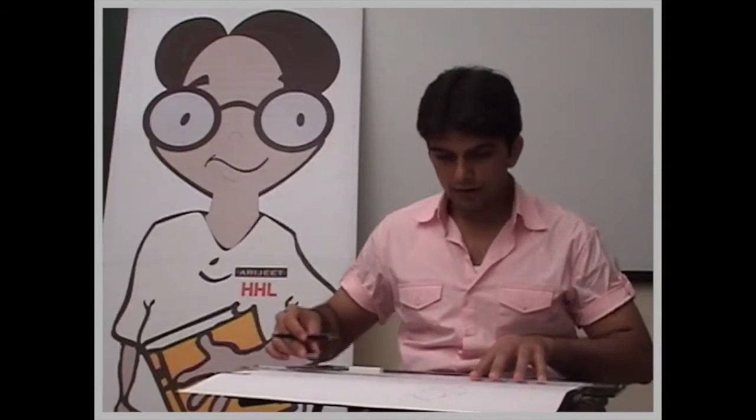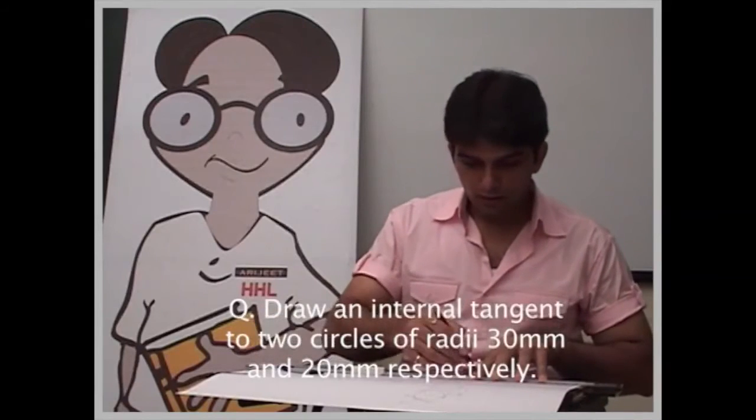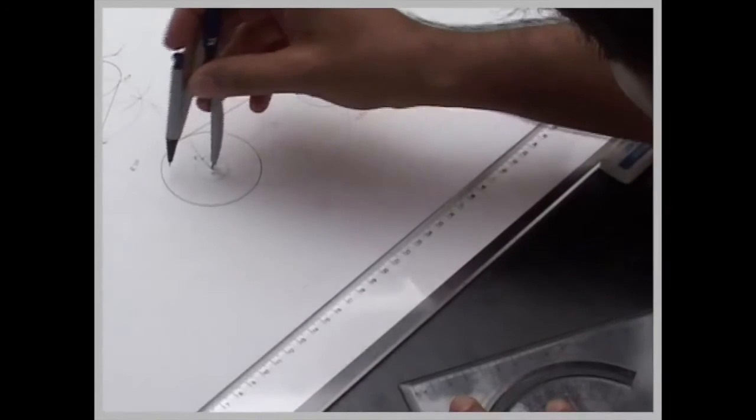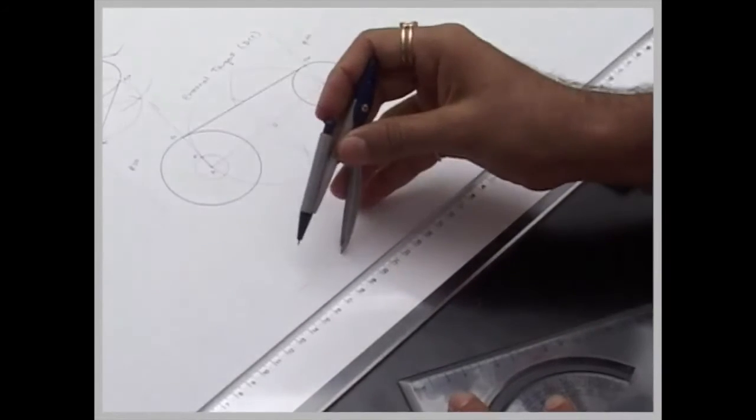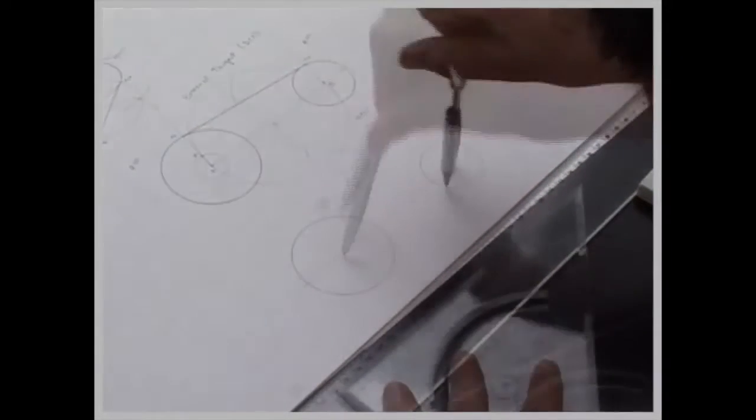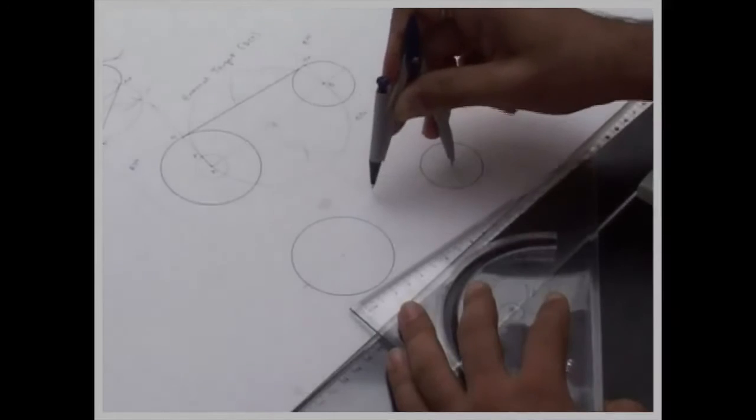Now we will draw internal tangent. Now internal tangent line, what we have to do? Same method. We will take the same dimension. We will take the radius 13. Again bisect.